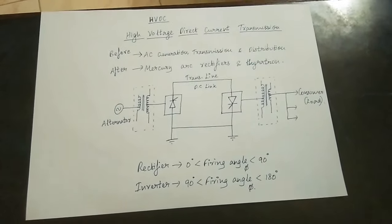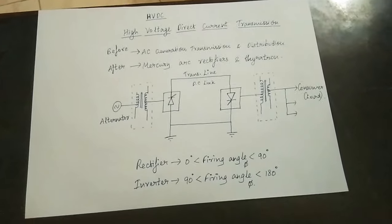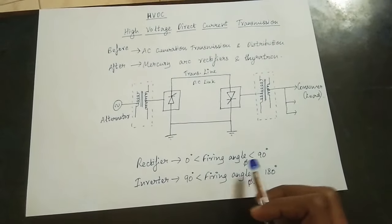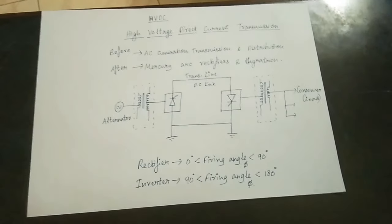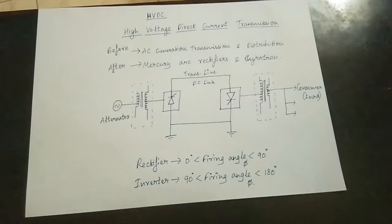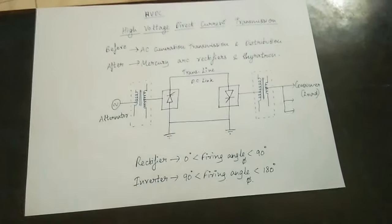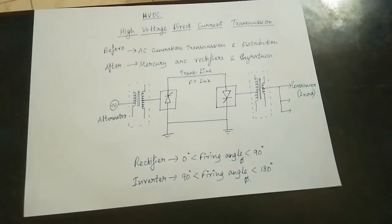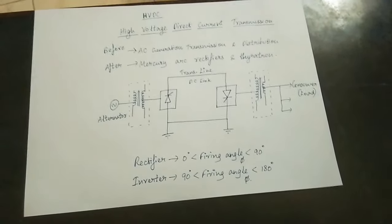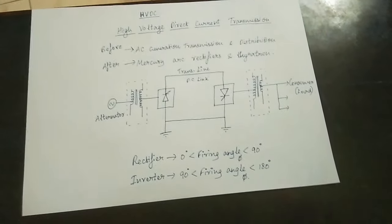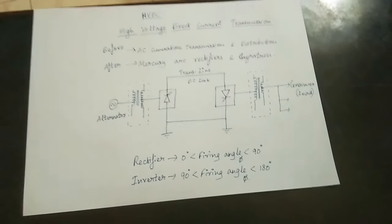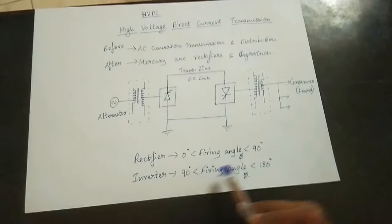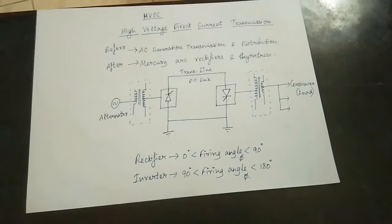We refer to these as power electronics devices at the ultimate level. The rectifier firing angle range is 0 to 90 degrees. The angle at which the gate pulse is given to the thyristor for its operation is known as the firing angle. In the inverter, the firing angle is greater than 90 degrees and up to 180 degrees.